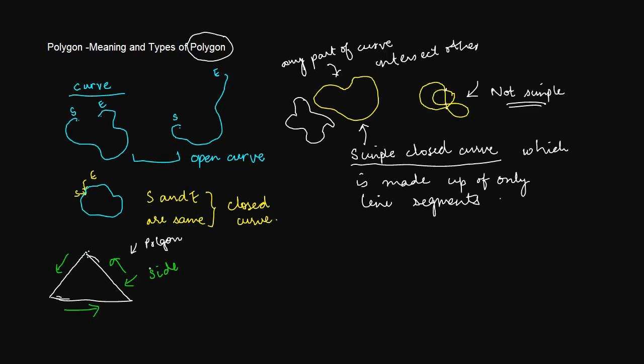So you have side, let us call this side A, you have side B, you have side C. So it is simply a closed curve which is made up only of line segments.